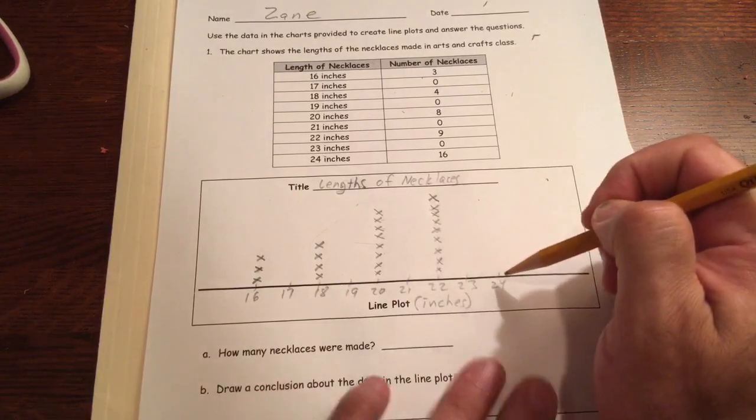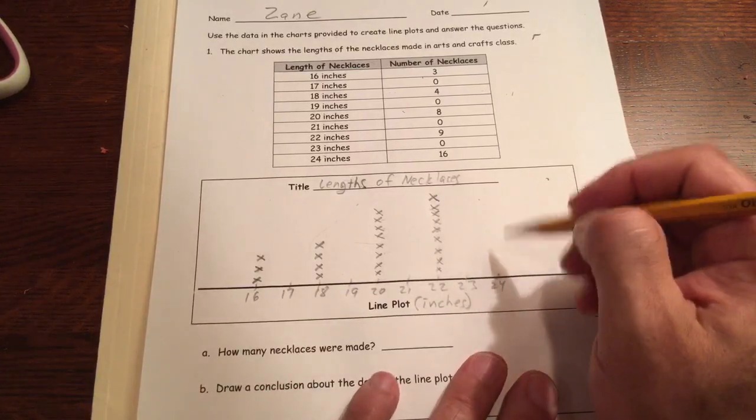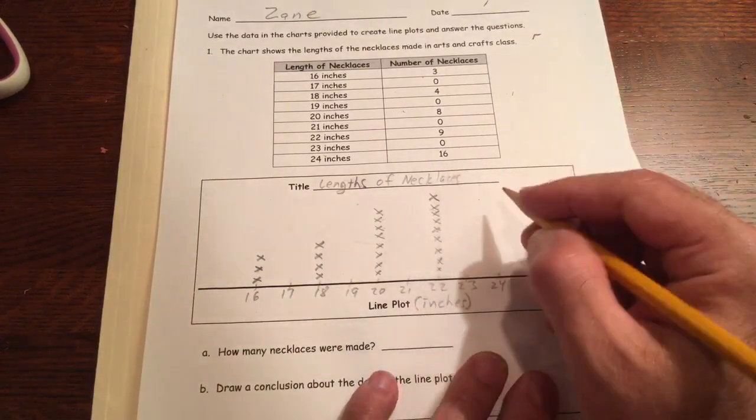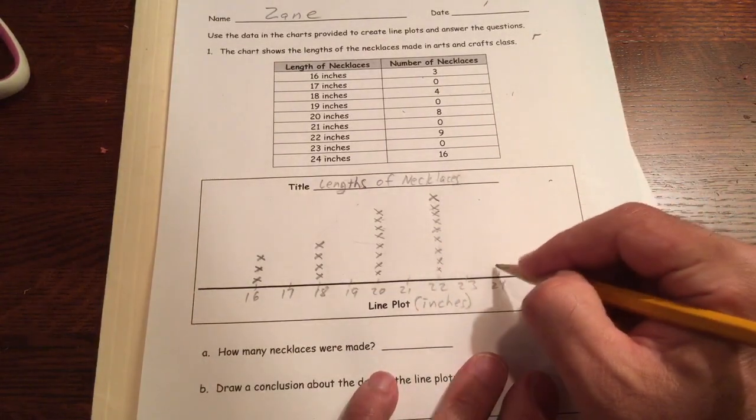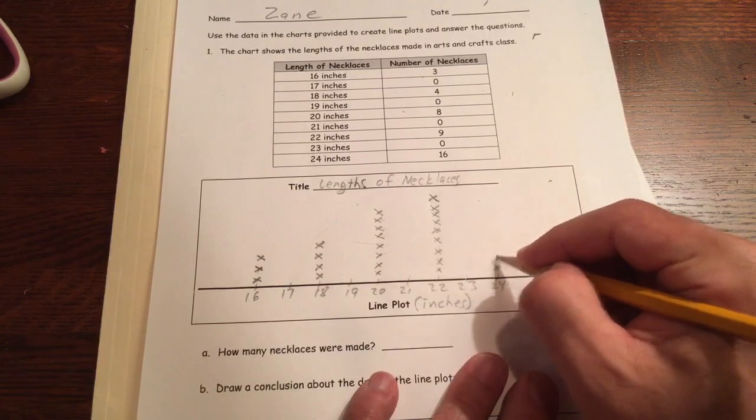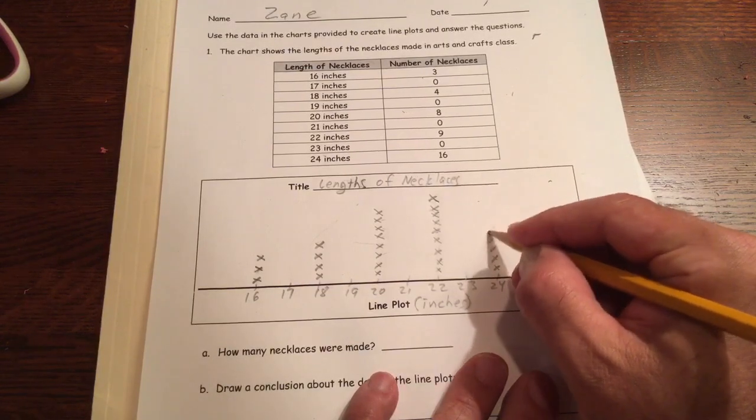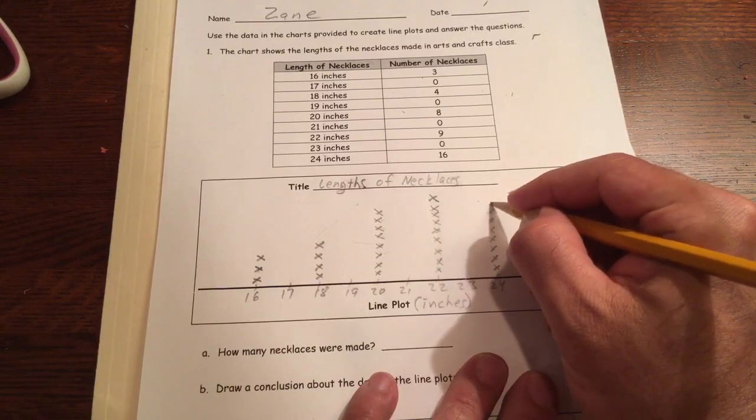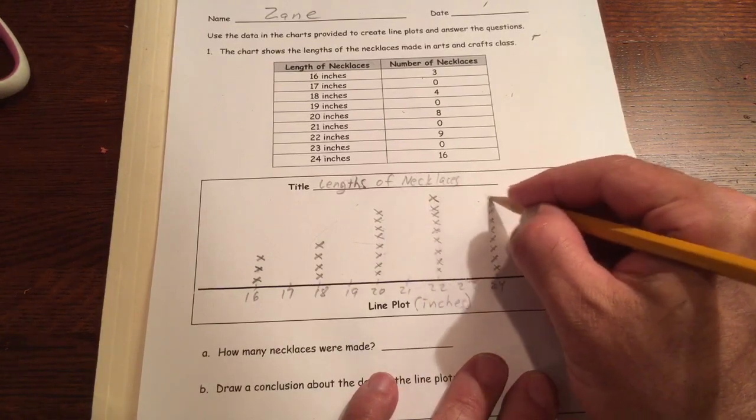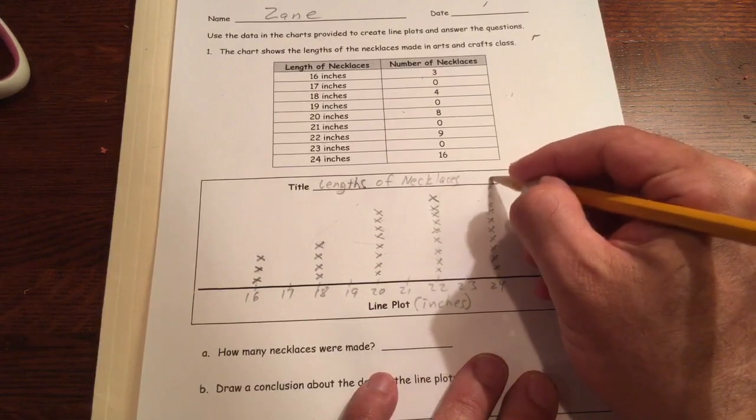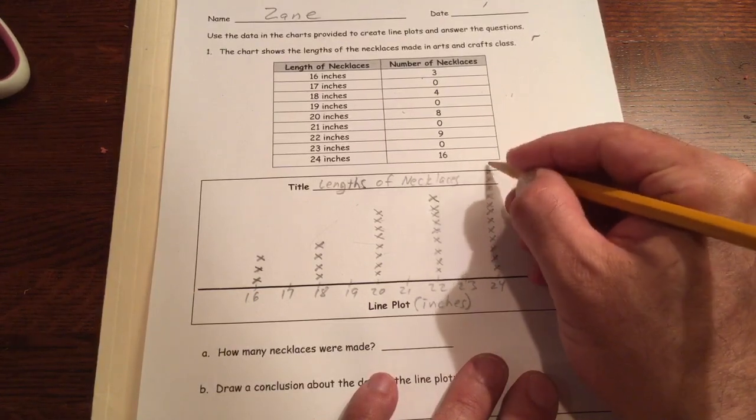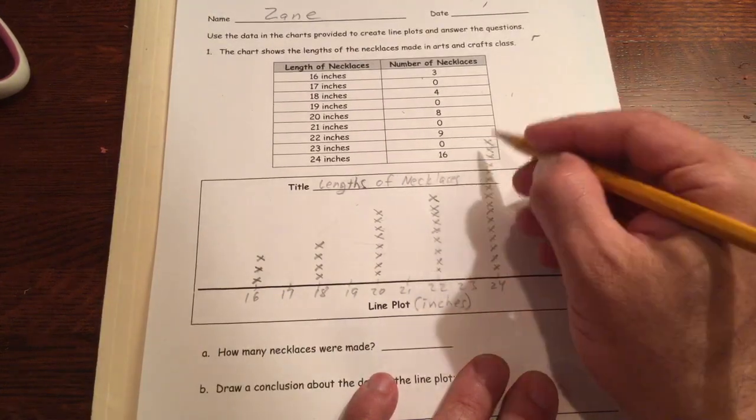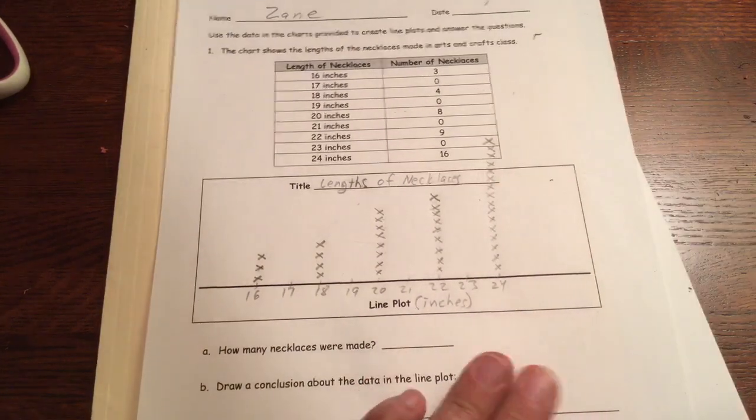Nothing here, and nothing here, and nothing here. And this 24 is going to be 16 necklaces. It's going to go like up to here. There's going to be a lot of necklaces here: 1, 2, 3, 4, 5, 6, 7, 8, 9, 10, 11, 12, 13, 14, 15, 16 necklaces. This is way up there.